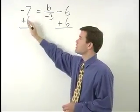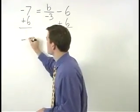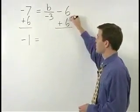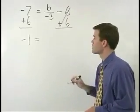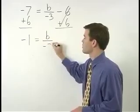On the left, negative 7 plus 6 simplifies to negative 1. On the right, our negative 6 plus 6 cancels, and we're left with B over negative 3.